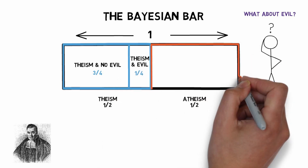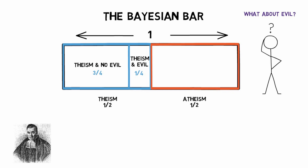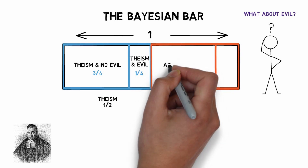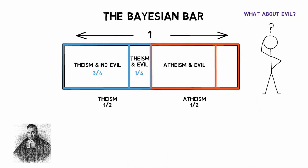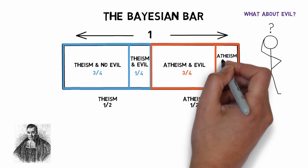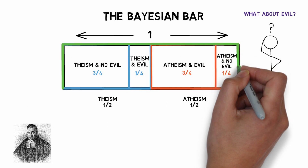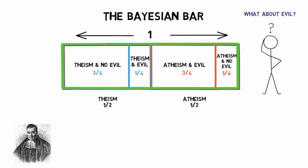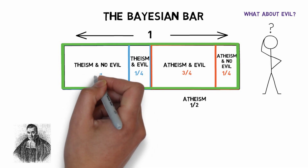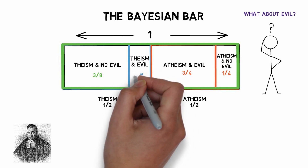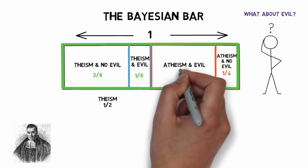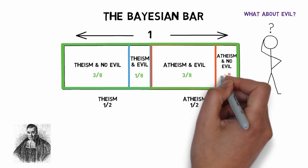Now he starts to think about the atheist portion of the bar, and thinks: suppose God doesn't exist, how likely is it that there would be evil? This time he thinks it's pretty likely that there would be evil if there's no God, because there's no being like God trying to prevent it, and it would be pretty unlikely that there would be no evil in an atheist world. So he gives three-quarters of the atheistic portion to atheism and evil, and a quarter to atheism and no evil. The next step is to think about these different probabilities in terms of the whole bar: the probability of theism and no evil is three-eighths; of theism and evil is one-eighth; of atheism and evil is three-eighths; and of atheism and no evil is one-eighth.